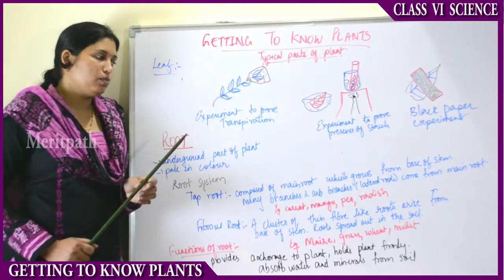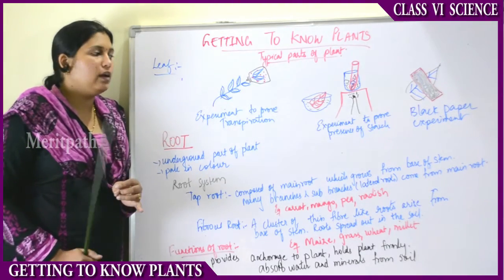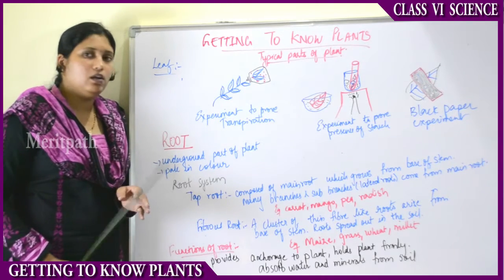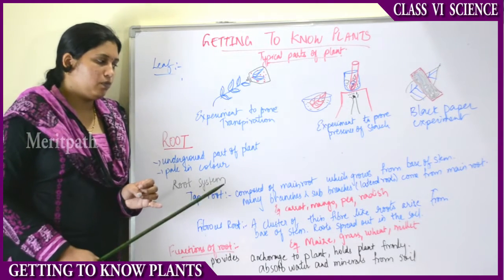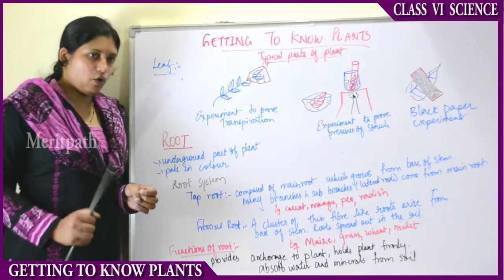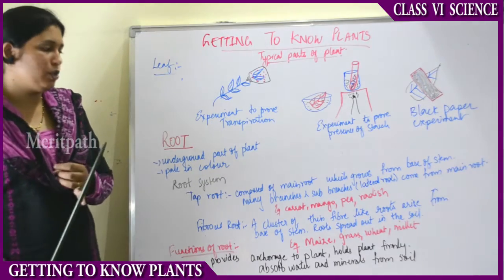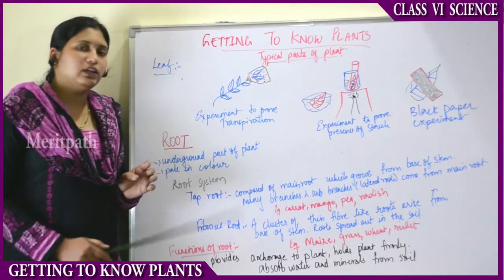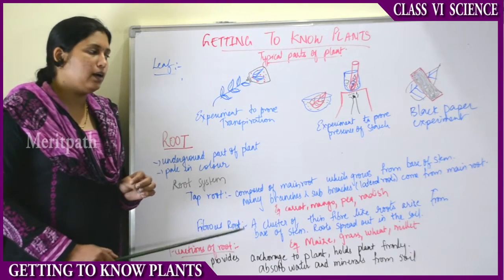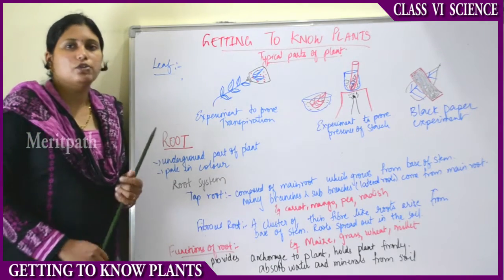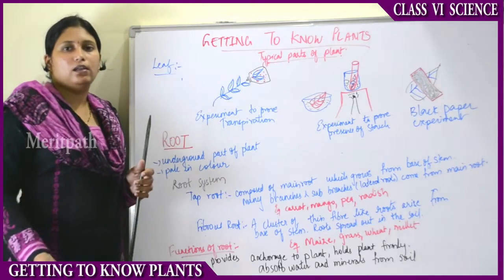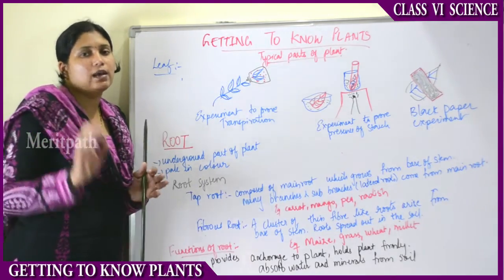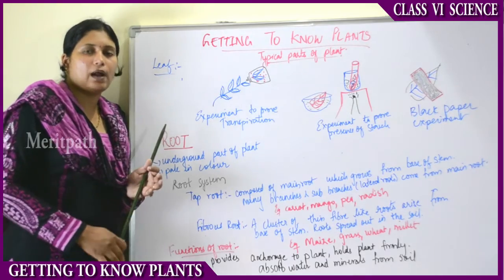To observe the type of root system, you have to remove the plant from the soil, wash the roots, and then observe. If you cut the roots and then plant the plant again in the soil, the plant will not survive. Roots are necessary for the plant to survive; if you cut off the roots, the plant cannot survive.